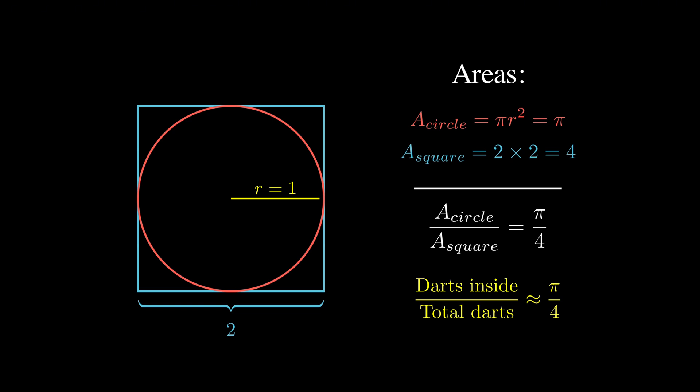And how can we approximate pi from that? Well, it's actually pretty simple. We look at the area of the circle and the square, and we take their ratio, which in this case gives us pi divided by 4. So we'd expect that the ratio between the number of darts inside divided by the total darts to also be pi divided by 4. So pi will be equal to 4 multiplied by the number of darts inside divided by the total darts.